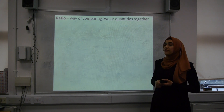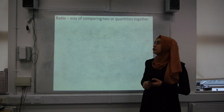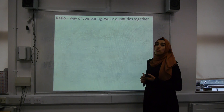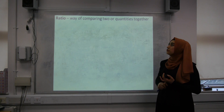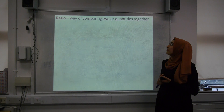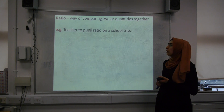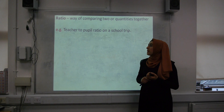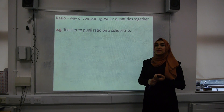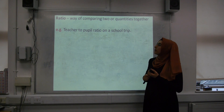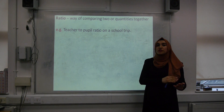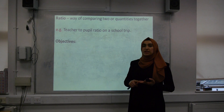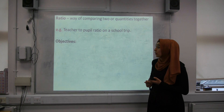I'll define the first word for you: ratio. The definition is a way of comparing two or more quantities together. For example, when we're going on a school trip, one teacher can take a maximum of ten pupils. So what we're comparing here is the quantity of teachers to the quantity of pupils.